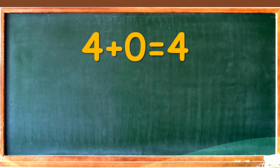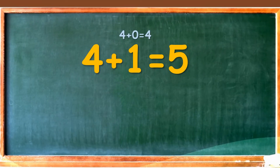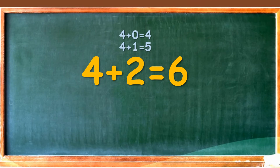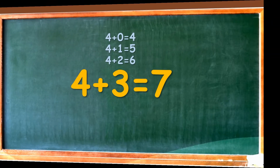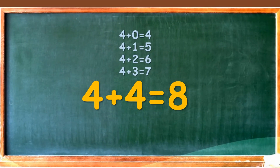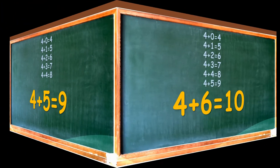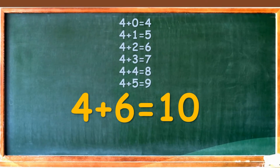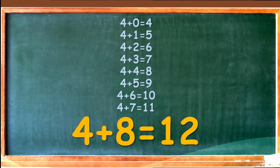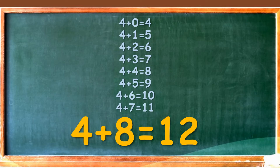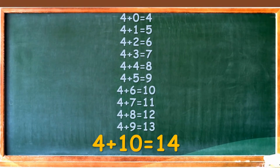Let us repeat. 4 plus 0 is equal to 4. 4 plus 1 is equal to 5. 4 plus 2 is equal to 6. 4 plus 3 is equal to 7. 4 plus 4 is equal to 8. 4 plus 5 is equal to 9. 4 plus 6 is equal to 10. 4 plus 7 is equal to 11. 4 plus 8 is equal to 12. 4 plus 9 is equal to 13. 4 plus 10 is equal to 14.